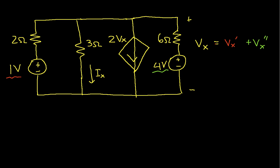Similarly, Ix will be the sum of Ix prime plus Ix double prime. With that introduction, let's go ahead and solve for Vx prime and Ix prime.